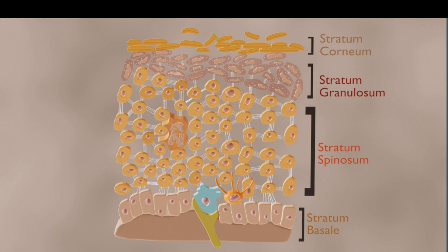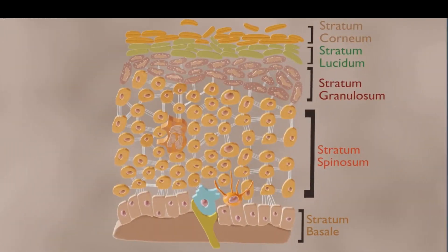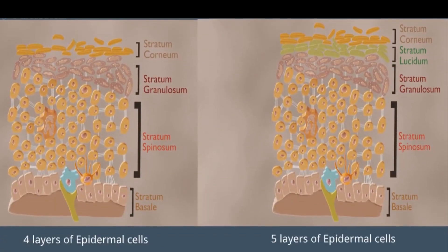The skin under the eyes have thin layer. It contains four layers of epidermal cells excluding stratum lucidum, but soles of the feet and palm have thick skin because it contains five epidermal cell layers.